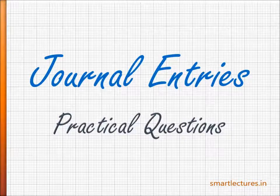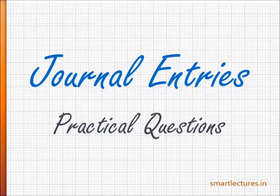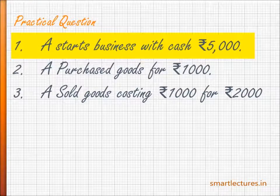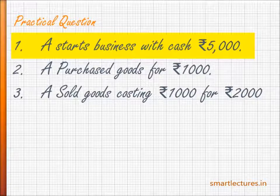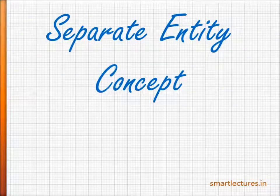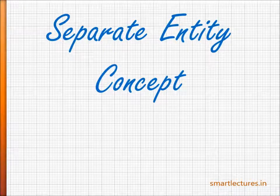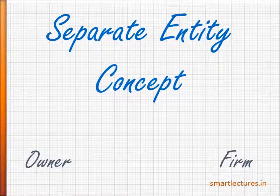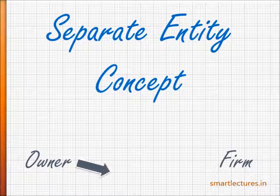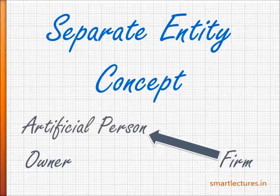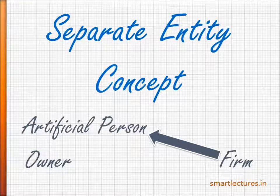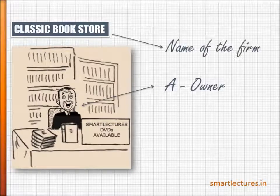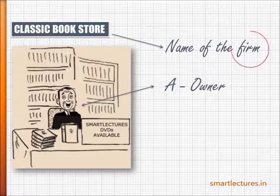I am going to take the same questions that I used at the time of equations. Before I start practical questions, I would like to remind you of something very important: the separate entity concept. Under the separate entity concept, the owner and the firm are different entities — both are different persons. The owner is the real person and the firm is the artificial person. In this question, the name of the owner is A and the name of the firm is Classic Bookstore, and all accounting is done from the point of view of the firm.